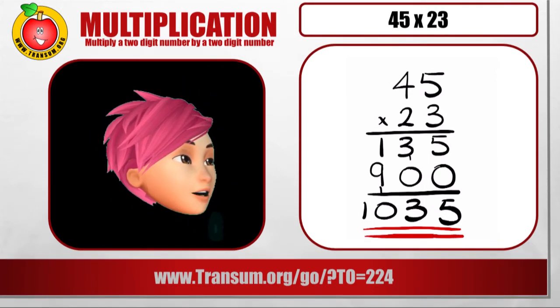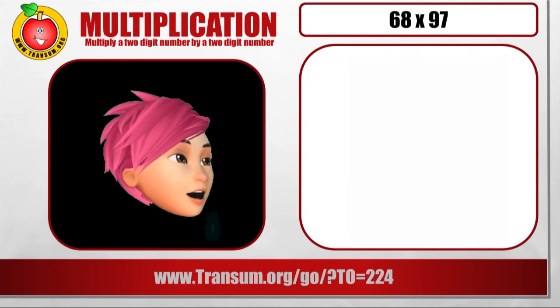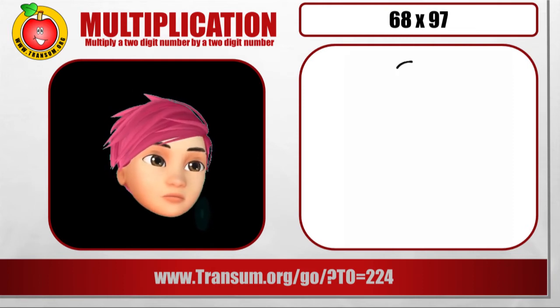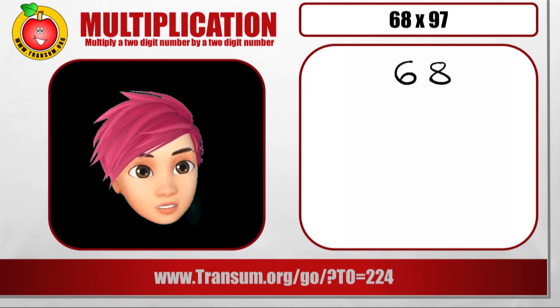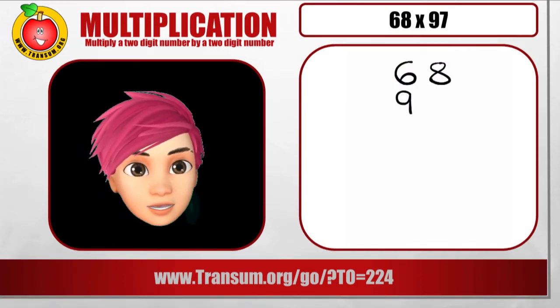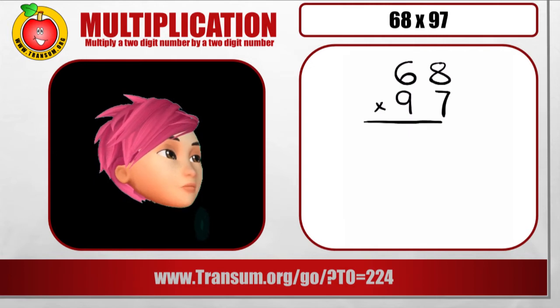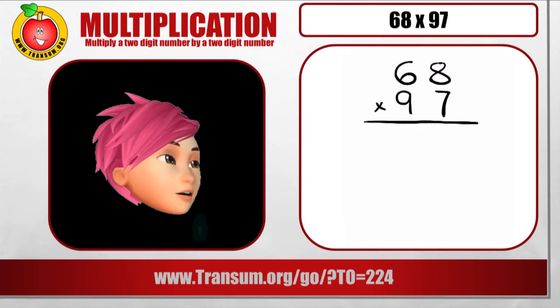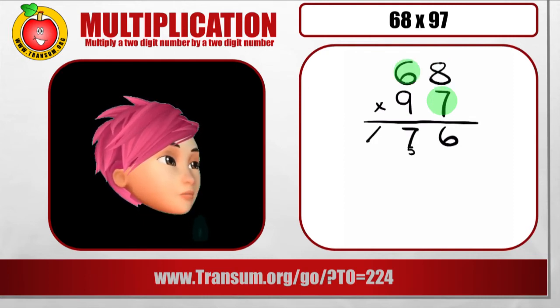Okay, what is coming up next? 68 times 97. Okay, write down the numbers as usual with the multiplication sign and the line underneath. Then we'll start off by multiplying by the 7. The 7 ones. So 7 8's are 56. 7 6's are 42. Add on the 5 makes 47.